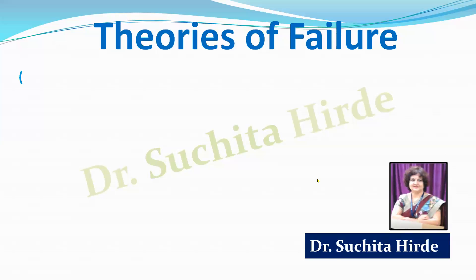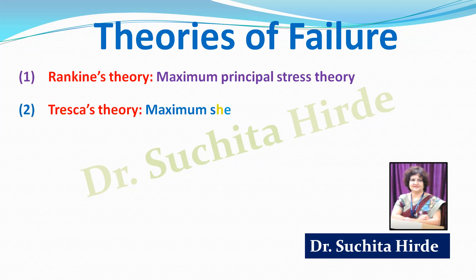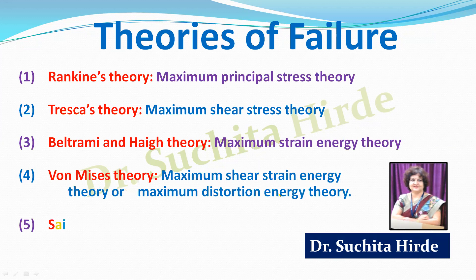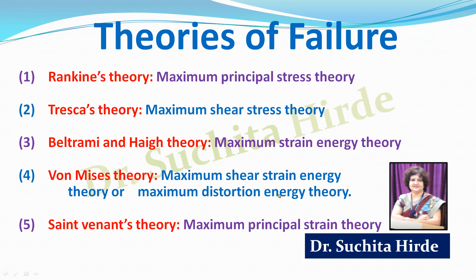Theories of failure include Rankine's theory, which is based on maximum principal stress; Tresca's theory, which is based on maximum shear stress; Beltrami and Haigh's theory, which is based on maximum strain energy; Von Mises theory, which is also called the maximum distortion energy theory and is based on maximum shear strain energy; and St. Venant's theory, which is based on maximum principal strain in the member. Let us apply all these theories to solve a numerical problem on a 3-dimensional stress system.